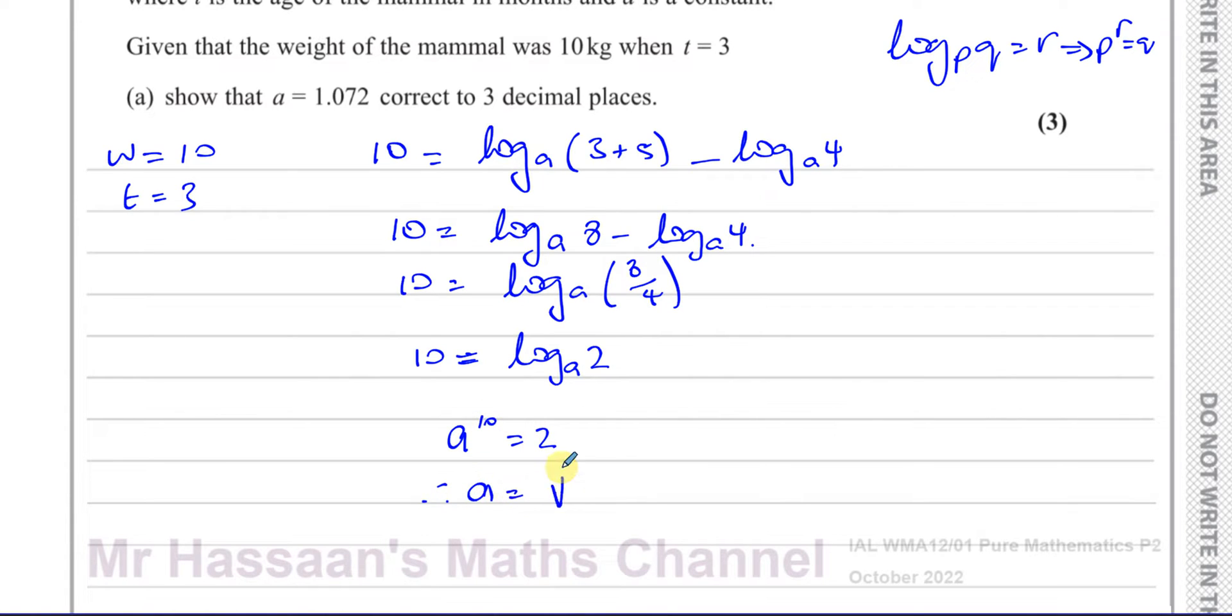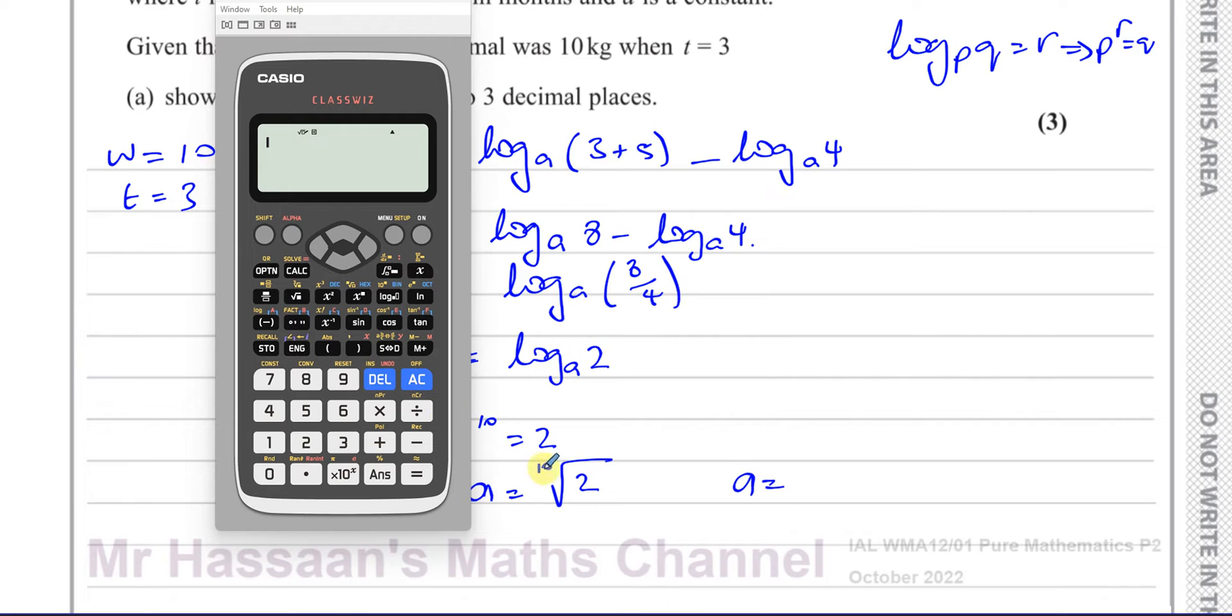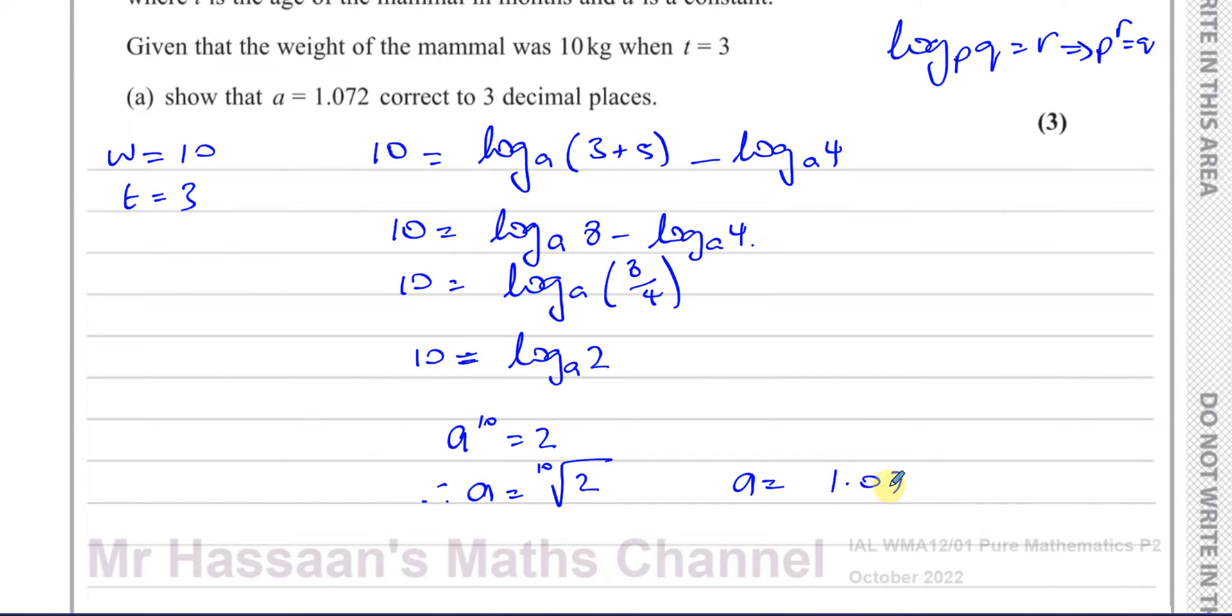Therefore, we can say a is equal to the 10th root of 2. So there we can write the answer down for that. So we have shift and this button over here for a root. We can choose the root we want, which is 10th and then of 2. And we write down the answer 1.07177. And we want to write it to three decimal places. So therefore, a is equal to 1.072. And that's exactly what's required to three decimal places.